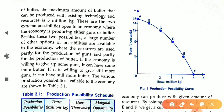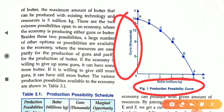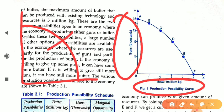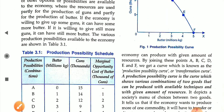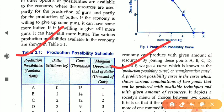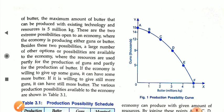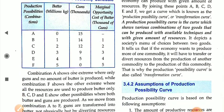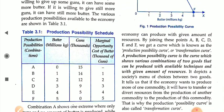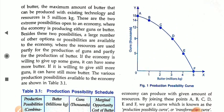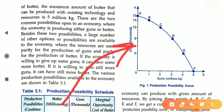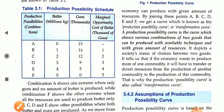The Production Possibility Curve represents combinations of two goods — in our case, butter and guns. The PPC curve is concave and downward sloping. This curve is also known as the Transformation Curve. So always keep in mind: the PPC or transformation curve is a concave, downward-sloping curve obtained by plotting the combination table on a diagram.